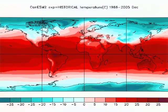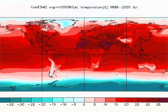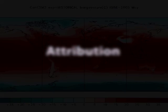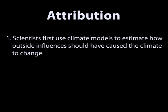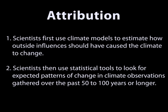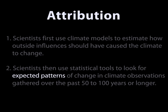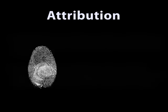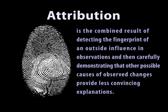Models are used to understand the causes of past climate change and to project future climate change. Since the causes of observed changes are not always readily apparent, climatologists use a process called attribution to determine the likely causes of observed climate change. In this process, they first use their climate models to estimate how outside influences — such as greenhouse gas increases since the Industrial Revolution — should have caused the climate to change. They then use statistical tools to look for those expected patterns of change in climate observations gathered over the past 50 to 100 years or longer. These expected patterns, which are distinct from natural internal patterns of variability, are called fingerprints. Attribution, then, is the combined result of detecting the fingerprint of an outside influence in observations.